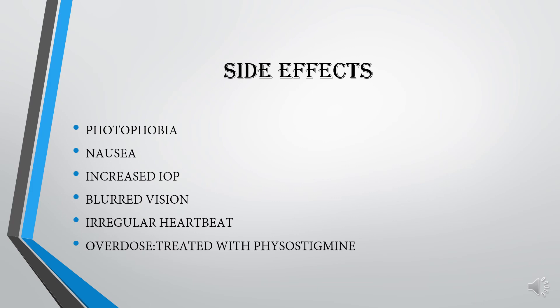Side effects of Atropine include: 1. Photophobia, which results from dilation of the pupil allowing more light into the eye, bleaching the retina. 2. Nausea. 3. Increased IOP, which can occur because dilation of the pupil may narrow the anterior chamber angle. 4. Blurred vision, due to the relaxation of accommodation. 5. Irregular heartbeat, as it acts on M2 receptors on the SA node in the heart. 6. Overdose of Atropine is very dangerous and is treated with its antidote named physostigmine.